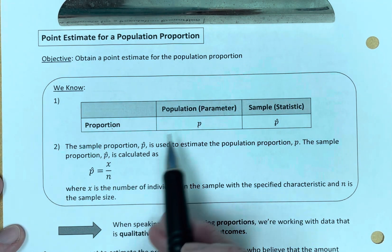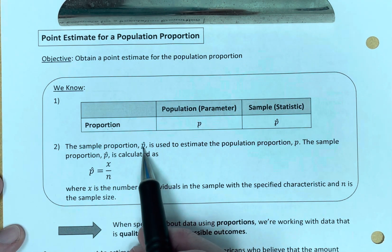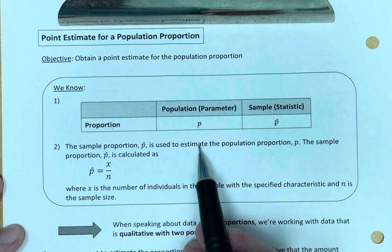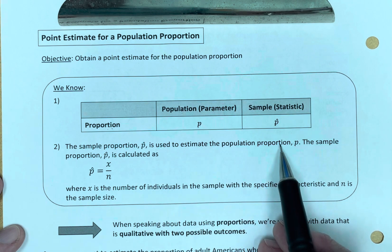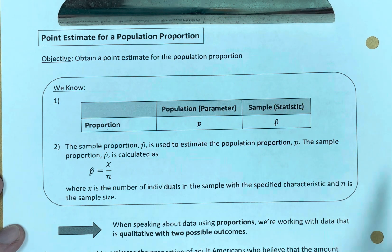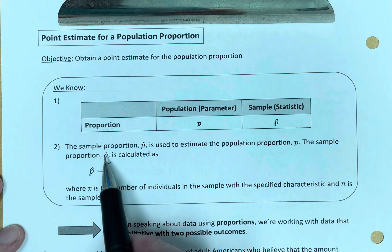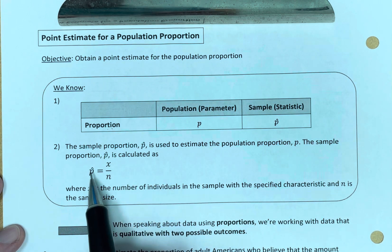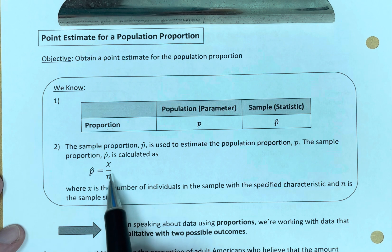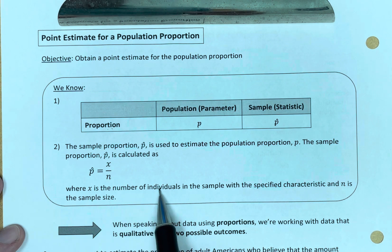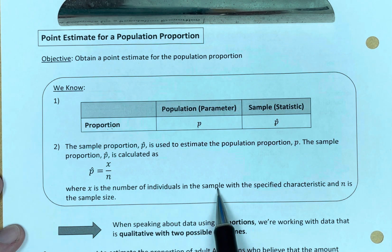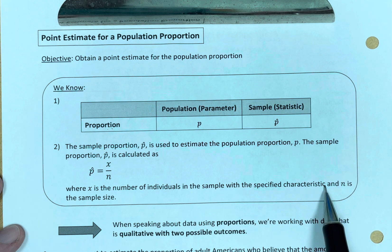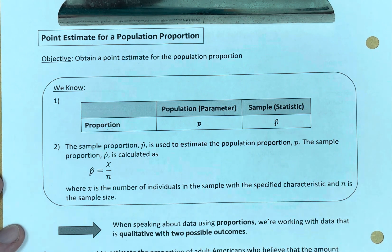We also know that the sample proportion, P-hat, is used to estimate the population proportion, P. The sample proportion P-hat is calculated as follows: P-hat is equal to X over N, where X is the number of individuals in the sample with the specified characteristic, and N is the sample size.